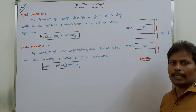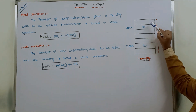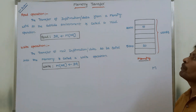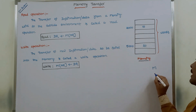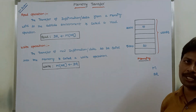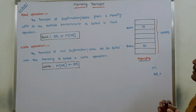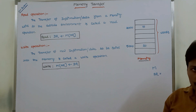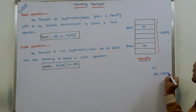We already know that memory can be organized in the form of cells. Each cell can be called as one word. The particular word of a memory can be denoted by capital M. Each word has a particular address. That address is held by a register called as address register, which contains the address of a particular memory word. Suppose I am taking this memory word — this memory word's address is 2000. That address is stored in the address register, so the address register contains 2000.